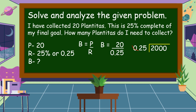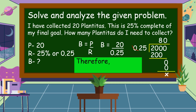Let's divide. 2 divided by 25 cannot be, so we take two digits. 20 divided by 25 still cannot be because 20 is less than 25, so we take three digits. 200 divided by 25 equals 8. 8 times 25 is equal to 200. 200 minus 200 is equal to 0. Bring down 0. 0 divided by 25 is equal to 0, and we don't have a remainder. Therefore, I need to collect 80 plantitas. This is the answer in our problem.